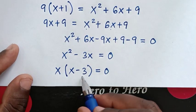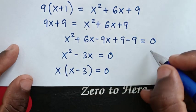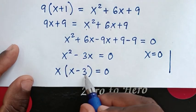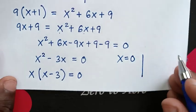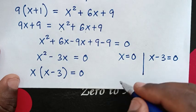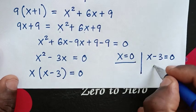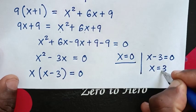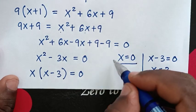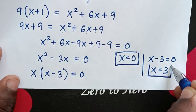From the factored equation, we have two solutions. The first solution is x equals 0, and the second comes from x minus 3 equals 0, giving x equals 3. Therefore, we have two solutions: x equals 0 and x equals 3.